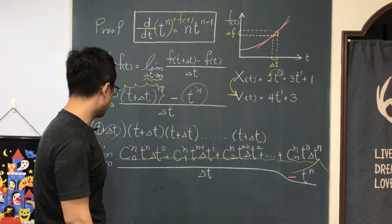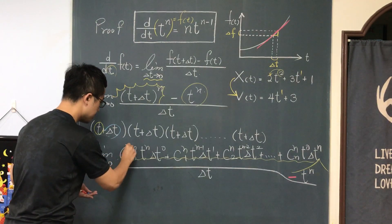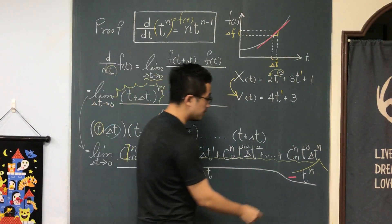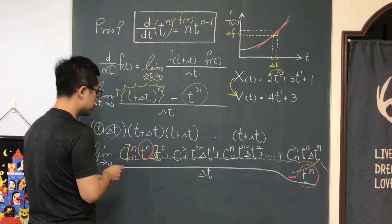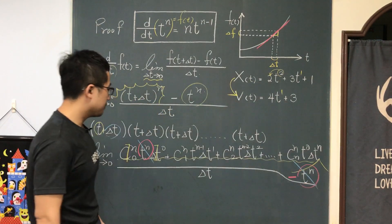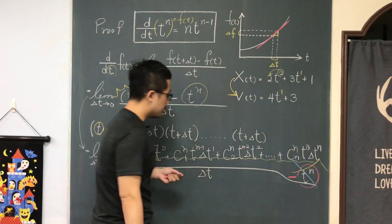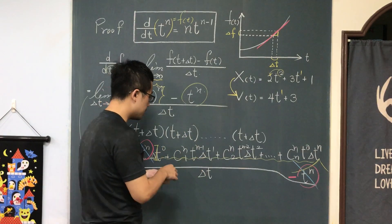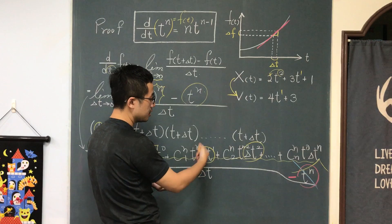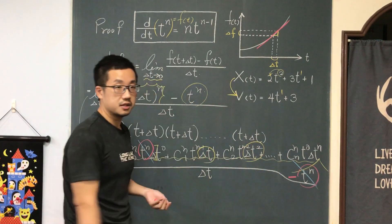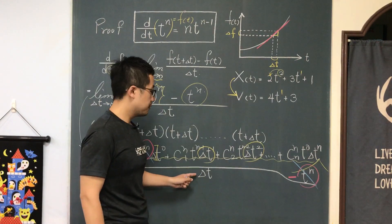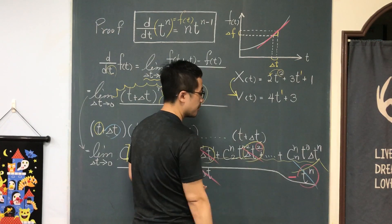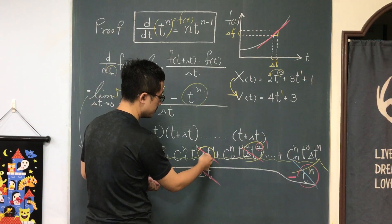Let's simplify. The first term — n choose 0 times tⁿ times Δt⁰ — and the very last subtracted term, minus tⁿ, are basically the same and cancel out. For all the digits in between, they all contain delta t: delta t to the first power, delta t squared, delta t cubed. So we can cancel one delta t from numerator and denominator. The second power becomes first power, and after cancelling, the exponent on delta t decreases by 1.